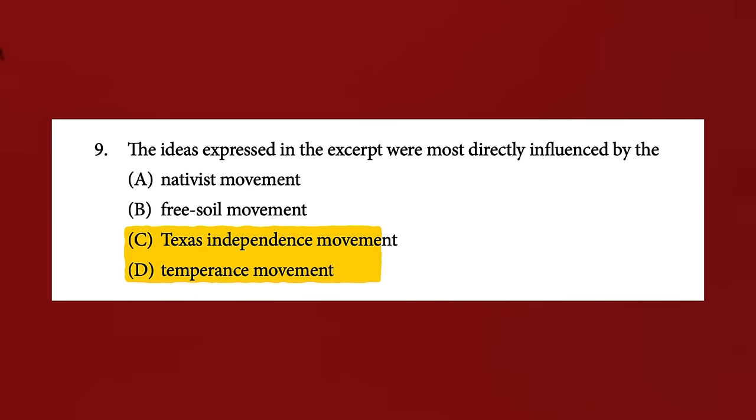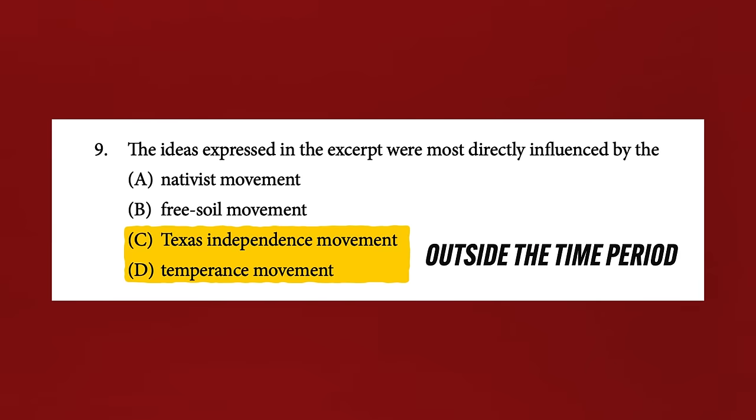Now that you've read and interpreted the stimulus, it's time to answer the question. You'll have four possible answers to choose from, and those answers will be one of three species. You're going to have two obviously wrong answers — the reason they're wrong is because they're in a different time period than the question is asking about, which is most common, or they're giving you a different historical thinking skill than the question asks about. For example, if the question asks about cause and change, the obviously wrong answer might indicate a continuity instead.